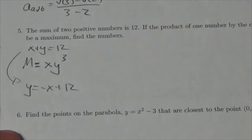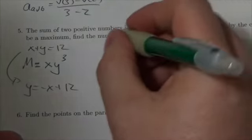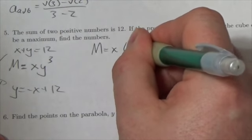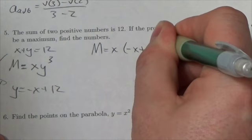I'm going to solve it for y there, and then I'll make the substitution. So M is going to equal x times negative x plus 12 cubed.